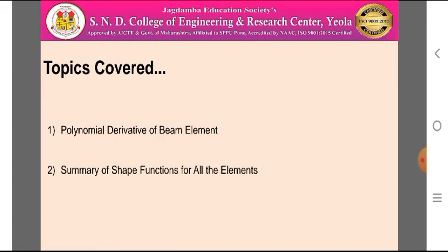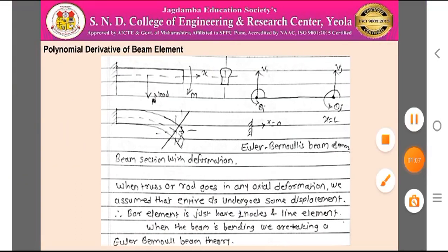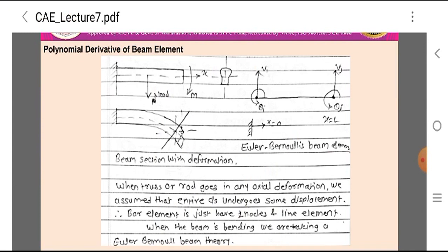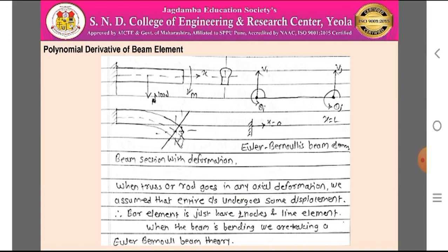In this session, we are discussing polynomial derivatives for the beam element and a summary of all the shape functions for all the elements studied during computer-aided engineering. A beam is a structural member used to sustain or overcome loads. Beams are classified into fixed-free beam or simply supported beam. Consider the example of a cantilever beam — it is fixed at one end and free to move at the other end, loaded by a certain load at the center with a bending moment M.